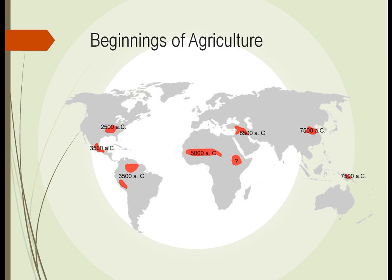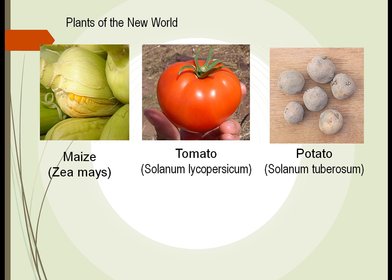We look here and we see the Fertile Crescent 8,500 years ago. We think agriculture started over in China 7,500 years ago, and someplace in Africa maybe even 10,000 years ago. Unlike today, where you go to the supermarket and can see all sorts of choices for different fruits and vegetables, that's not what happened many thousands of years ago.